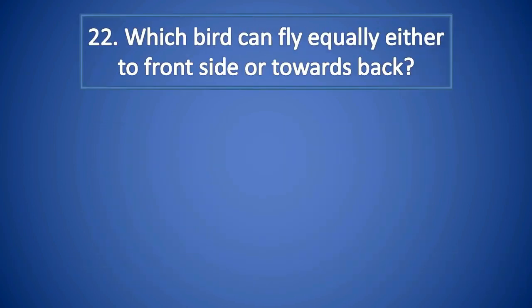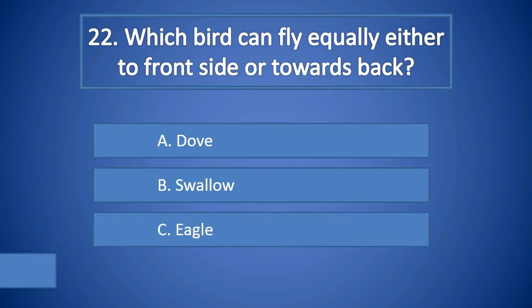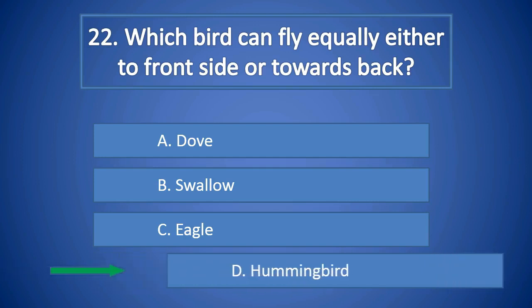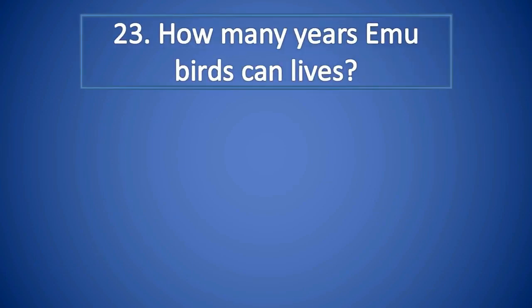Question Number 22: Which bird can fly equally either to the front side or towards the back? A. Dove, B. Swallow, C. Eagle, D. Hummingbird. Right answer is D. Hummingbird.